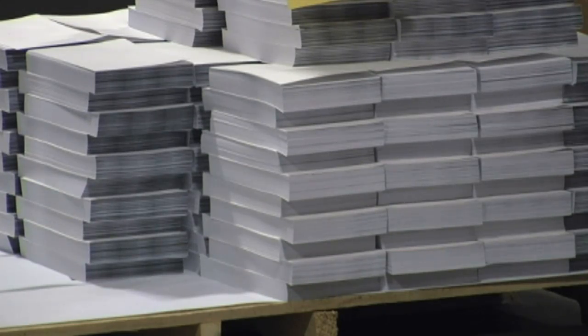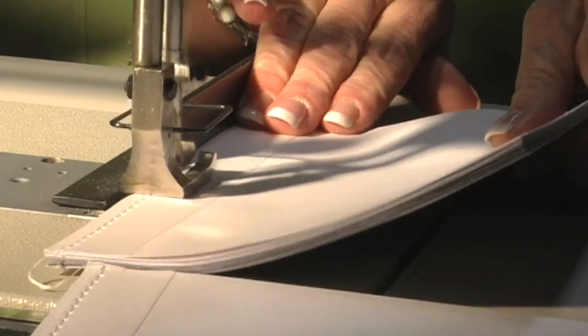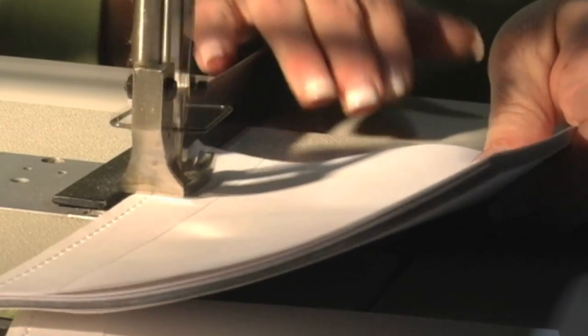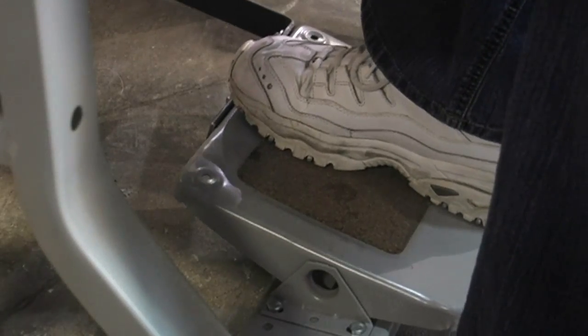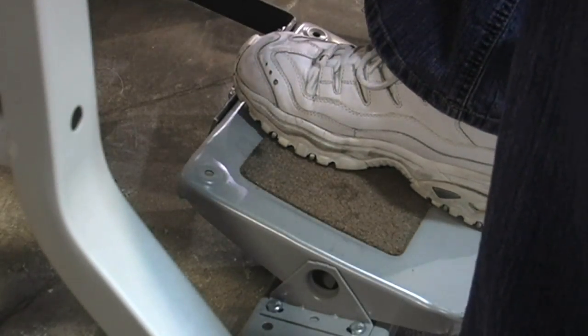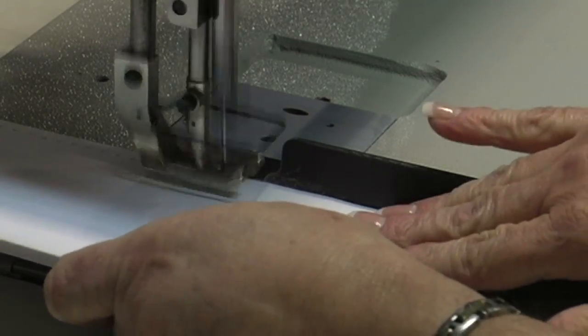Your book block is first either adhesive-bound or side-sewn. We use side-sewing for a more structurally sound product by using a combination of nylon and cotton string. Side-sewing is widely used on children's books and thinner book blocks.